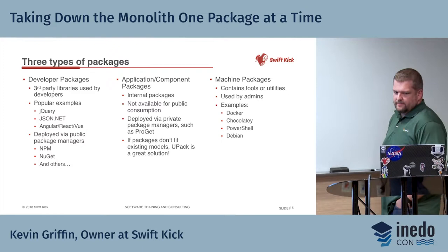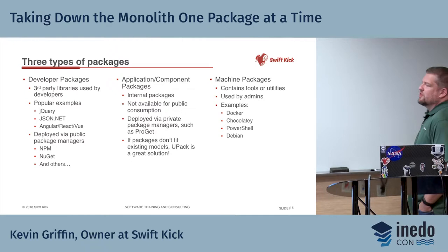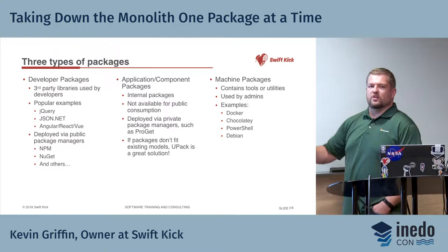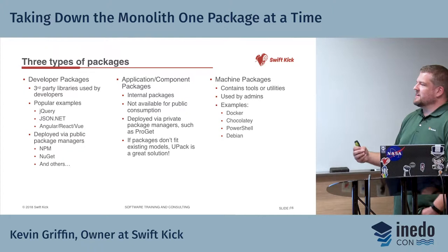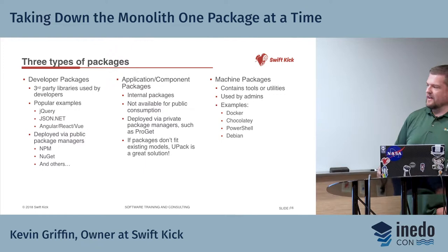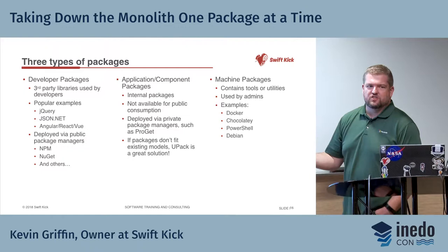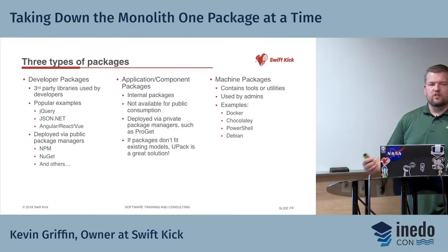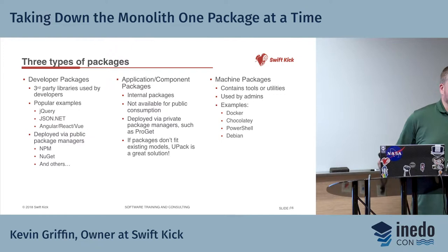Second, you have application and component packages — things you use internally that you're not putting out for public consumption. This is not open source; it has all the keys to the kingdom. You're not going to go to a public NPM or NuGet to get these packages — you're hosting them internally. Because you can't host NPM or NuGet internally without a tool, you use something like ProGet, which is built for managing internal or private packages. And then there are cases where you want to package your entire web application as a deployable — you need something more universal, which is what UPack, Inedo's Universal Package format, is for.